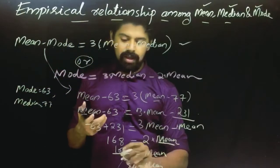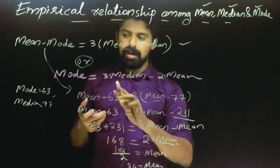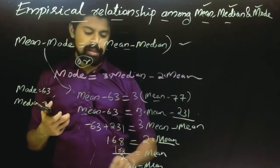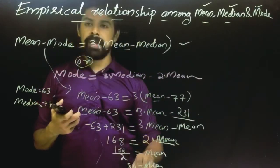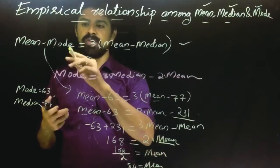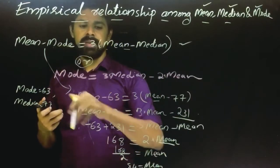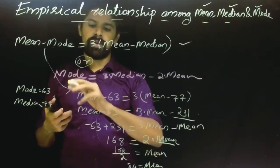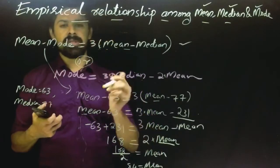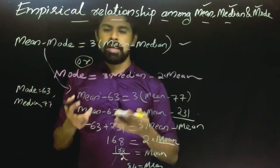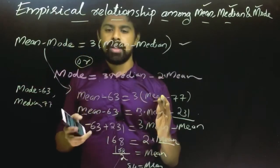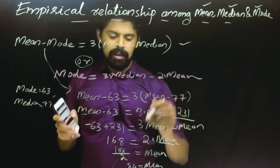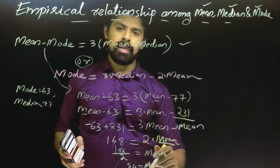The mean is 84. The mode is 63 and the median is 77. This formula gives us the mean. If you have any formula, you can learn this and apply it.